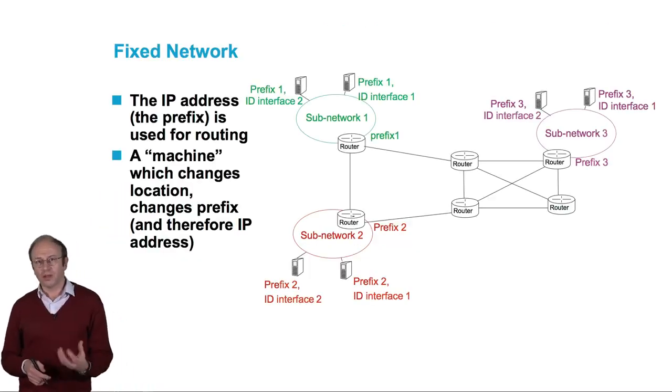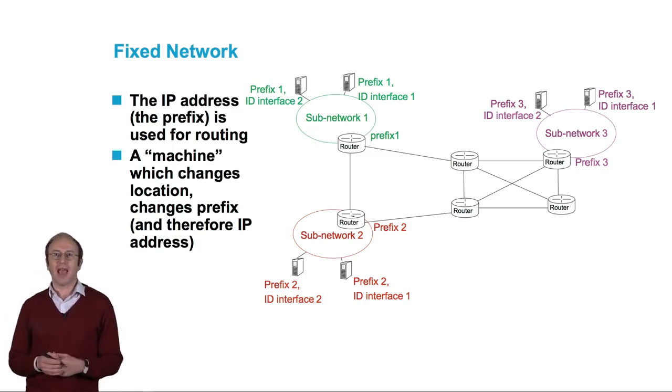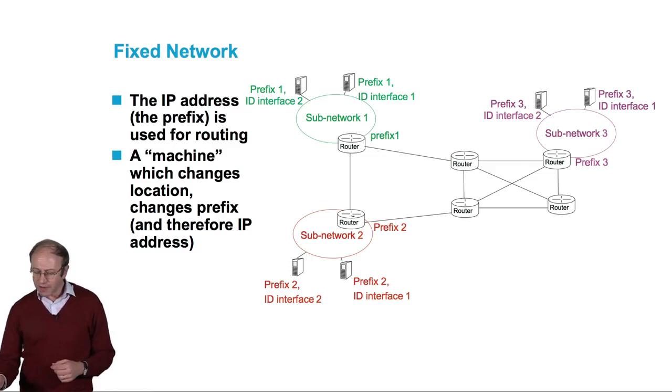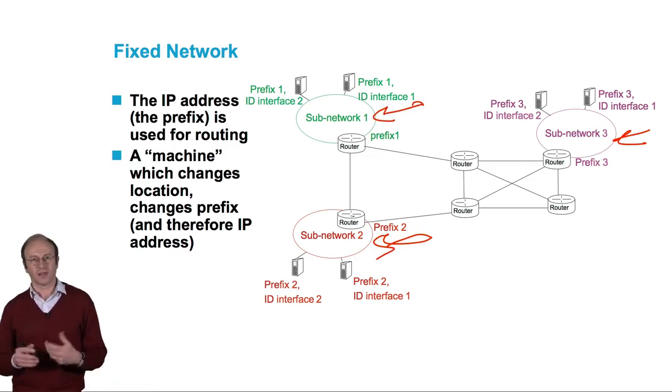To understand this question, we need to go back to IP networks. An IP network is firstly an interconnection of different subnetworks, represented by different colors in this slide.